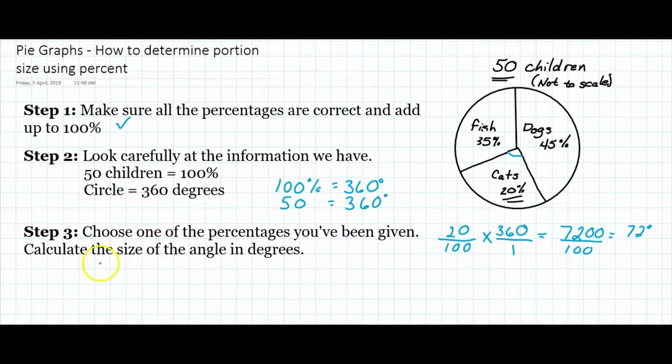Okay, so pause the video and give it a try. 45% is the same thing as 45 over 100, and we multiply that again by 360 over 1.